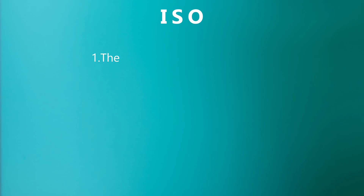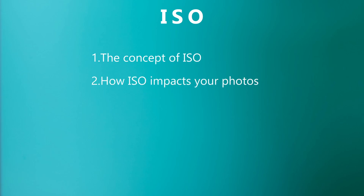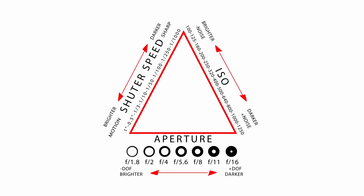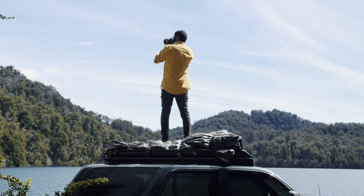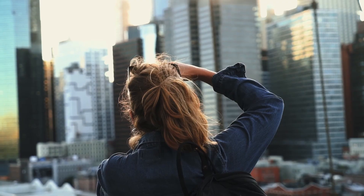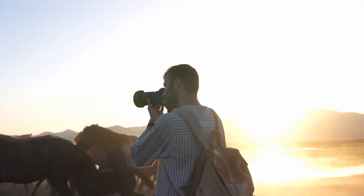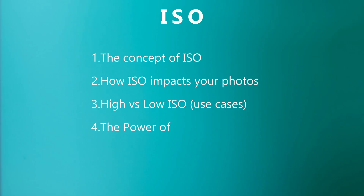Hi everyone! In today's video we'll talk about ISO — what's the true concept of ISO, how it can impact your photos, and also why a lower ISO isn't always the best option. We will also see how ISO interacts with aperture and shutter speed in different types of photography like landscapes, portraits, street photography, and fast action photography. And as a bonus tip, I'll show you how Auto-ISO can be a powerful tool when you need flexibility and speed.